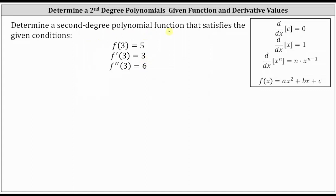A second degree polynomial function is a quadratic function. We will find the quadratic function in general form, which is f of x equals ax squared plus bx plus c. Beginning with the general form, let's now determine f prime of x and f double prime of x.